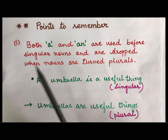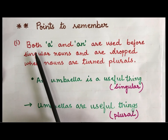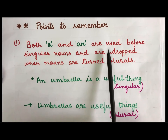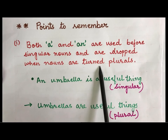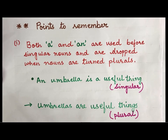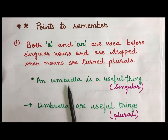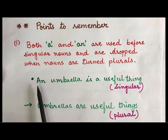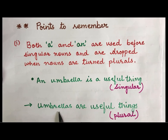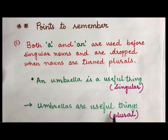Now there are a few points to remember. Both a and an are used before singular nouns and are dropped when nouns are turned plural. For example: an umbrella is a useful thing — umbrella is singular and starts with a vowel sound so we write an. Umbrellas are useful things — umbrellas is plural so we drop the article and write just umbrellas are useful things.